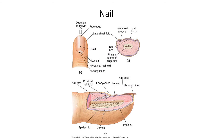Nails are found on the terminal ends of our fingers and toes and provide protection to those tips. They are also composed of keratin, and they have a cuticle — which forms a fold of skin that hides the nail root. The structure is very similar to hair: there is a nail follicle and a nail root, and they work the same way. If you damage the nail follicle, the nail won't grow back. But if you damage only the root and the follicle is still intact, that nail can grow back.